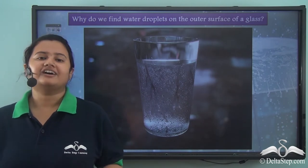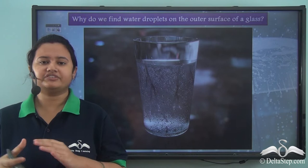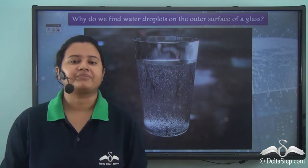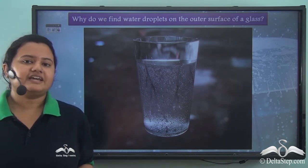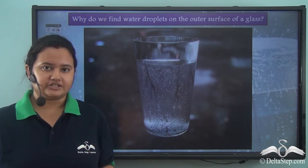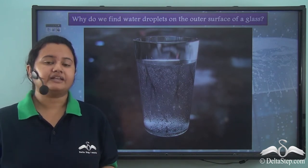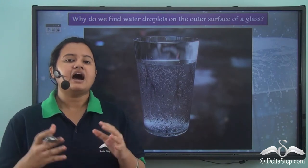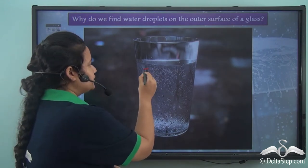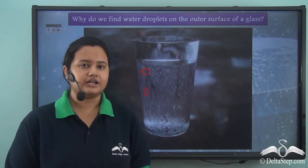Have you ever taken a glass out of a refrigerator and observed the change? If not, try it out. Take a cold glass out of a refrigerator and keep it outside for some time at room temperature. After some time you will find water drops on the outer surface of the glass.